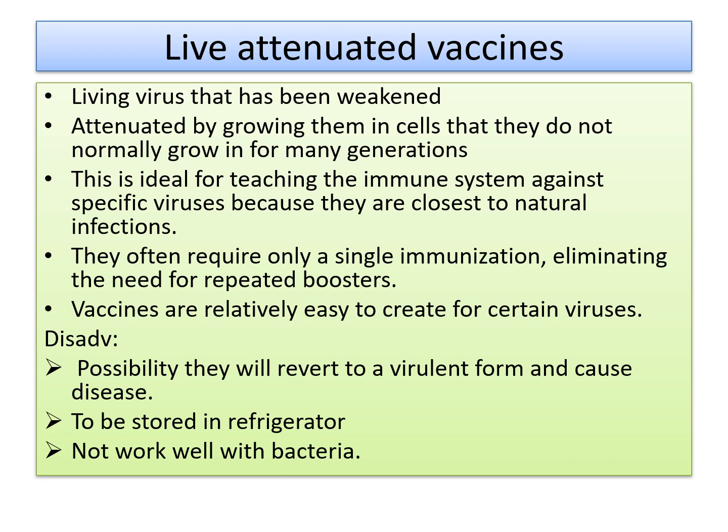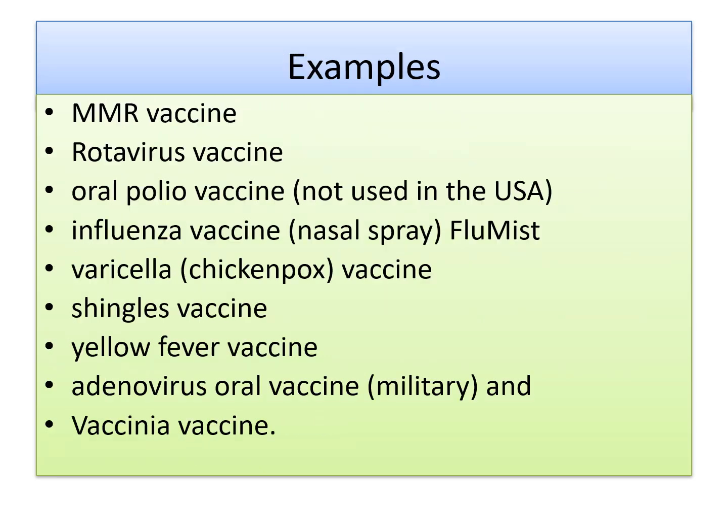This attenuated, weakened live form sometimes can regain its original strength and evoke the disease in the organism. Another disadvantage is that it must be stored in a refrigerator — if kept at normal room temperature, the vaccine loses potency. These vaccines also cannot work with all types of bacteria, only certain types. Examples of live attenuated vaccines include MMR vaccine, rotavirus vaccine, oral polio vaccine, influenza vaccine, varicella vaccine, shingles vaccine, yellow fever vaccine, adenovirus oral vaccine, and vaccinia vaccine.